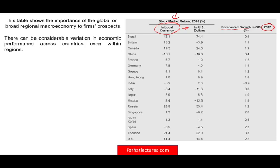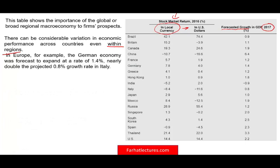There can be considerable variation in economic performance across countries within the same region. For example, Germany and Italy are both in the EU, yet the forecasted GDP growth for Germany is 1.4% versus Italy's 0.8%. So being in the same region doesn't mean you can apply one forecasted growth number across the board. Italy had a negative stock market return in 2016 despite a positive GDP forecast, partly because Italy carries much more debt than Germany, which had a positive overall stock return.